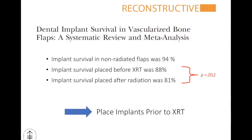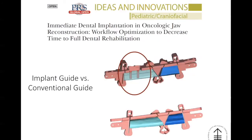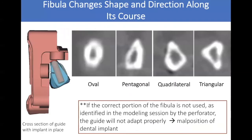Our goal is to place implants prior to radiation. The cutting guide on the fibula has two slots where immediate dental implants can be placed at the time of fibula flap transfer, allowing six weeks of osseointegration prior to radiation. The fibula changes shape along its course from proximal to distal — some areas may be oval, others triangular — so we must use the correct portion of the fibula when doing the cutting guide to avoid malposition of dental implants.